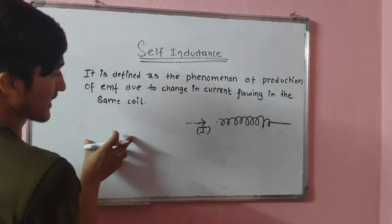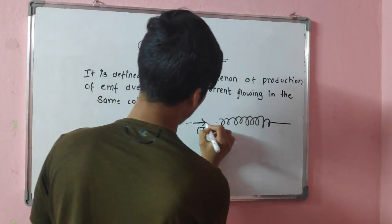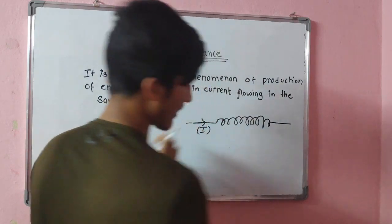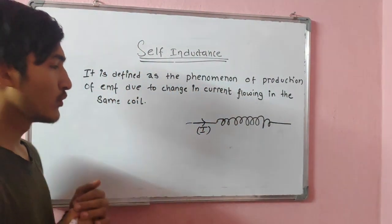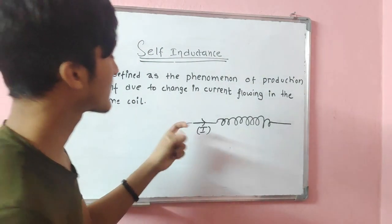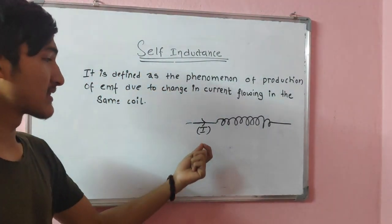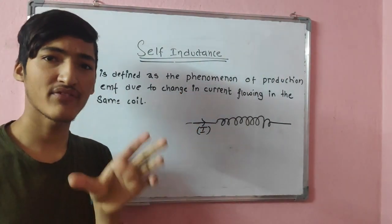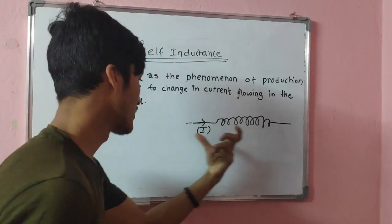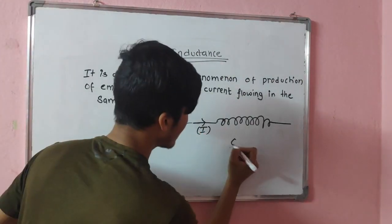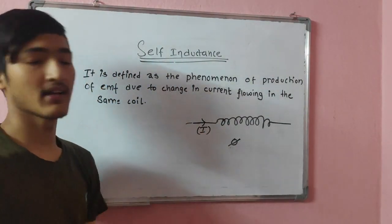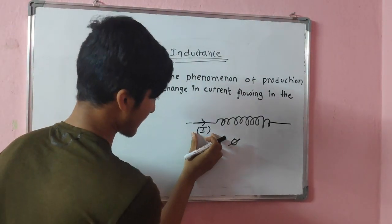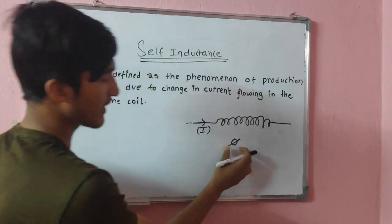Now let us derive the general expression. We have a coil made up of N number of turns where I amount of current is flowing. Whenever current flows in any coil, it sets up its own magnetic field. Due to that magnetic field, a magnetic flux φ is generated in the coil. Let φ be the flux generated due to this current I. If there is any variation in this current I, then there is also a variation in the flux.